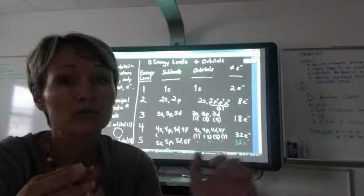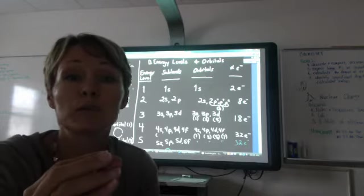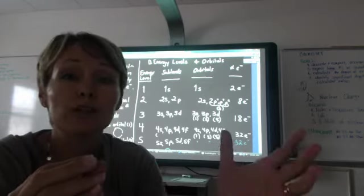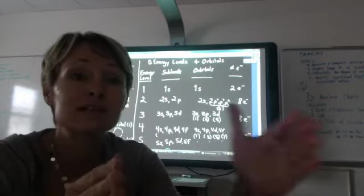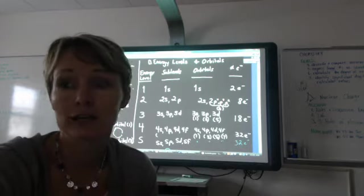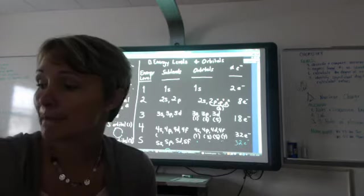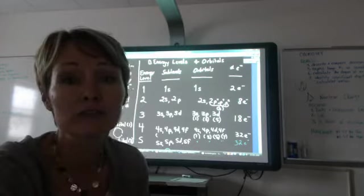Also remember, this is review, electrons do not travel in circular paths or orbits. We know the likelihood that we would find an electron at a certain distance from the nucleus based upon the energy of that electron. So, today we're going to talk about energy levels and orbitals.